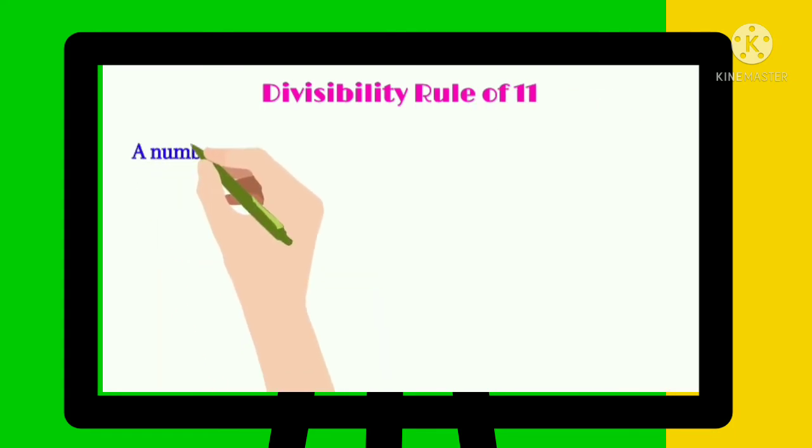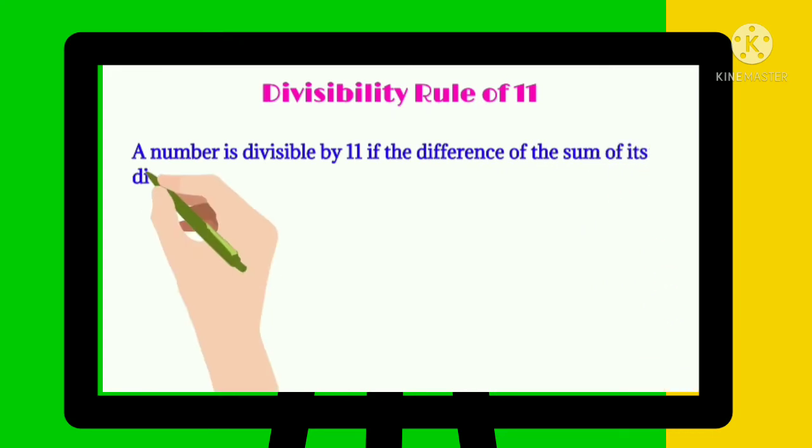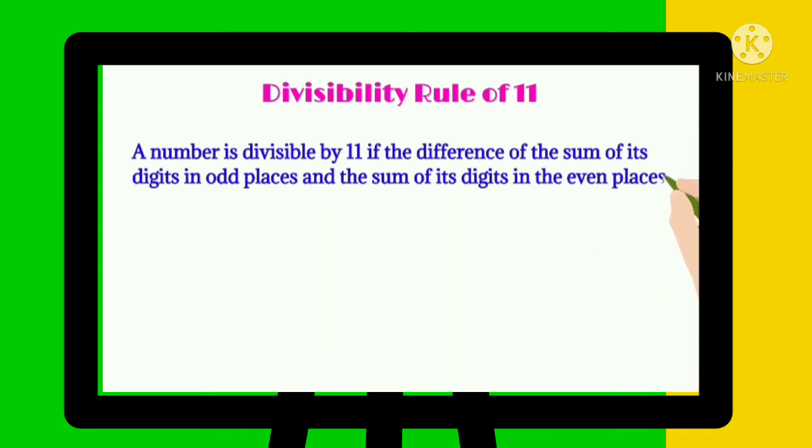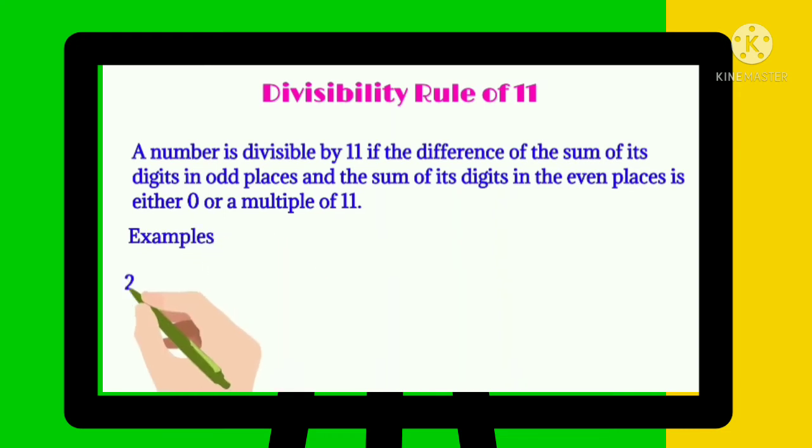Divisibility rule of 11: A number is divisible by 11 if the difference of the sum of its digits in odd places and the sum of its digits in even places is either 0 or a multiple of 11. Examples: